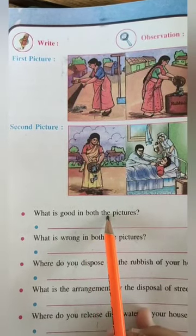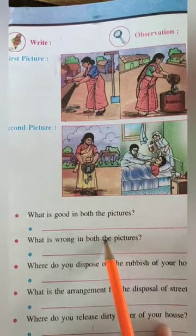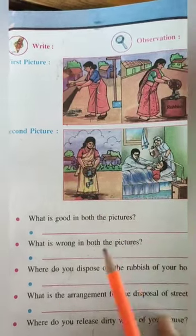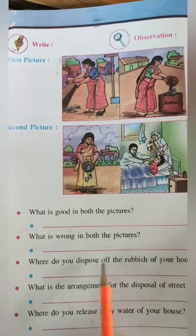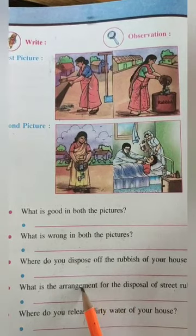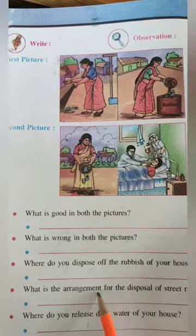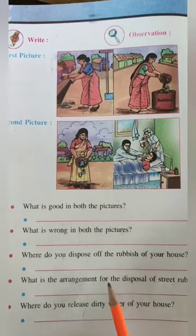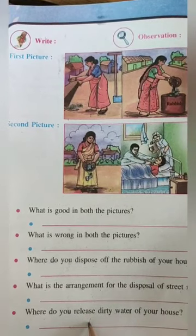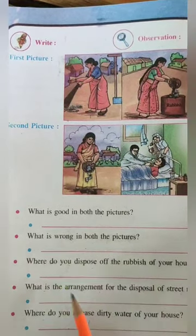तुम्हें यहाँ पर कुछ questions के answers लिखने हैं। What is good in both the pictures? दोनों pictures में क्या अच्छा है — इस lady ने कचरा उठाके dustbin में फेक दिया। What is wrong in both the pictures? यह lady ने कचरा नीचे फेका, उसके वजह से कोई भी बीमार हो सकता है। Where do you dispose of the rubbish of your house? घर का कचरा garbage van में dispose कर सकते हैं। Where do you release dirty water of your house? Direct drainage या gutter में घर का गंदा पानी release करते हैं।